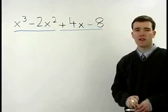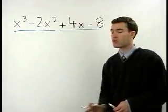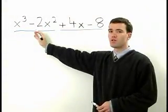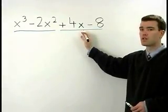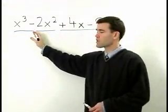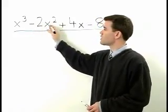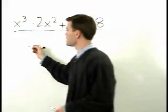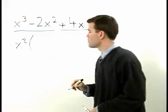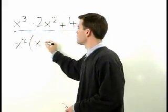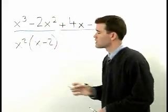We can factor out a greatest common factor from our first group of terms and a greatest common factor from our last group of terms. The greatest common factor for x cubed minus 2x squared is x squared. That leaves you with x minus 2 inside the parentheses.